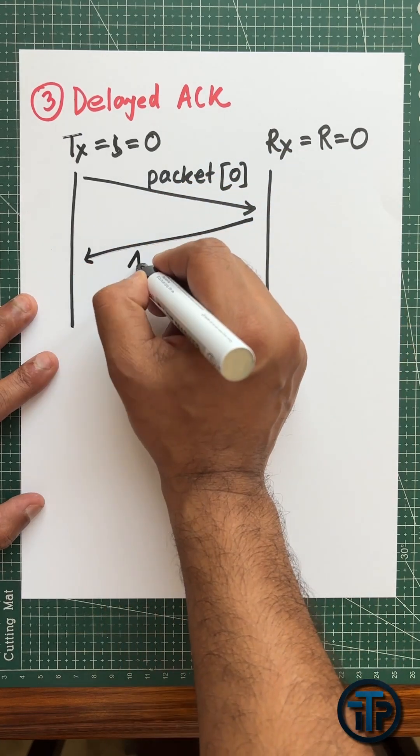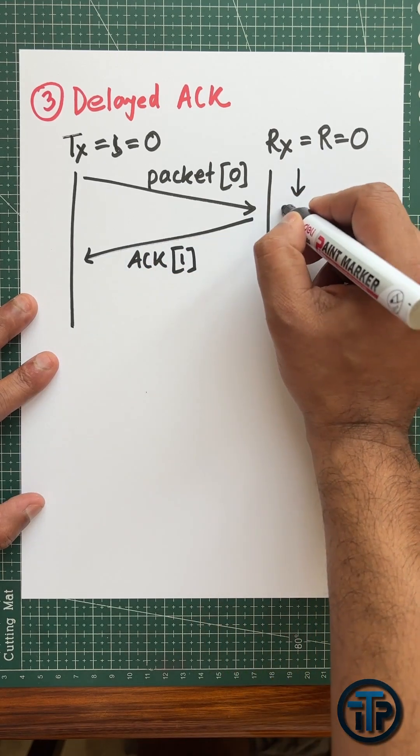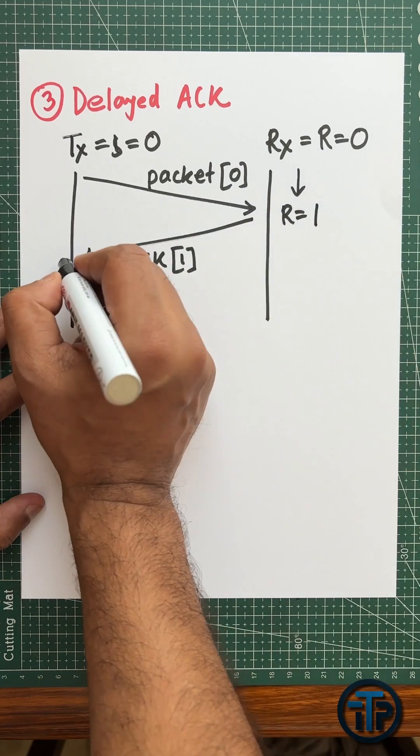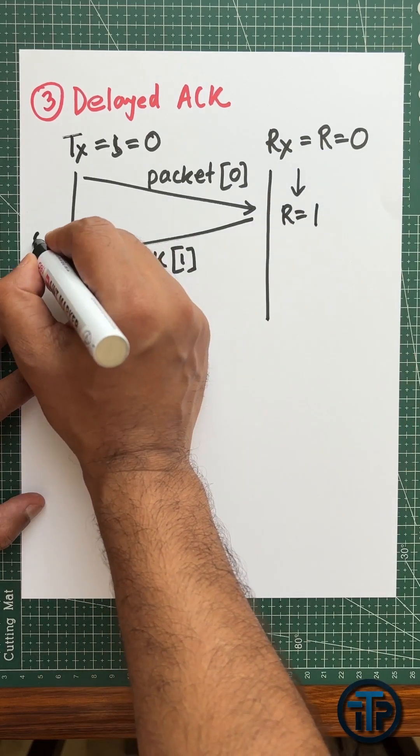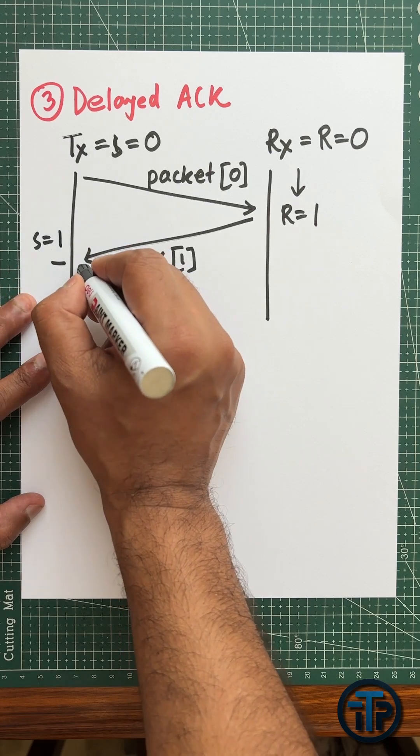When you receive the acknowledgement then what is happening, we are changing the value from r equals to zero to r equals to one.